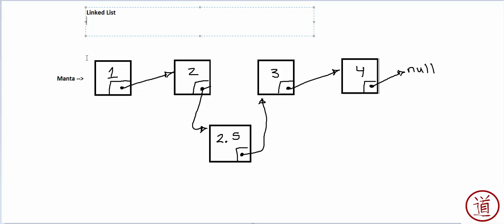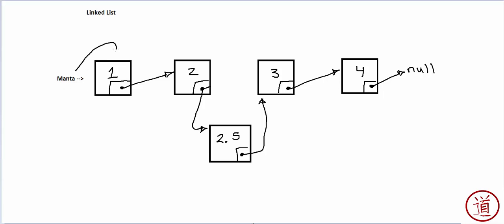When navigating a linked list, we start at the first reference and go to each item — each item is called a node. We go from where the first reference points, which is the start of the list, to node one, then follow the reference that node one has to tell us where node two is, then to node two, and so on. We know we're at the end of the list because we reach null. One problem, though, is that we cannot navigate backwards in the list — this is a single-direction linked list.